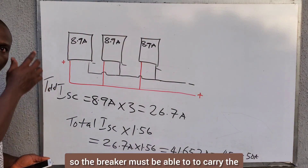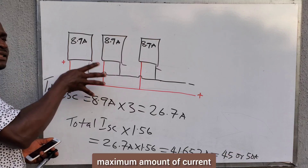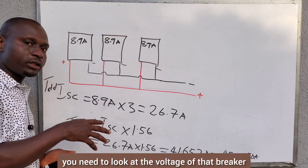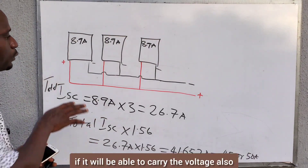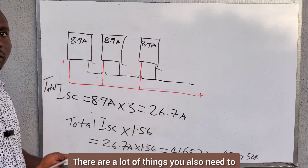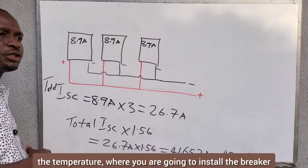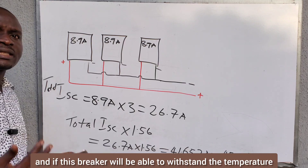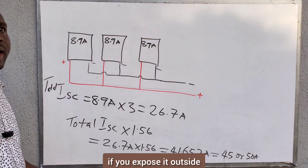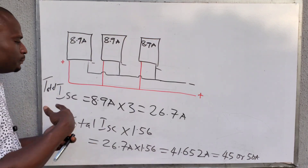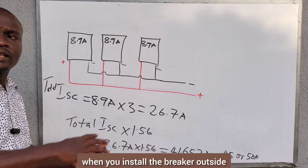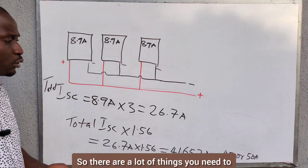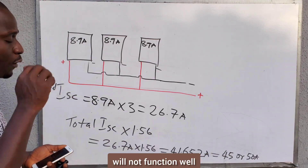The breaker must be able to carry the maximum amount of current that the solar panels are producing. You also need to look at the voltage rating of that breaker — whether it will be able to carry the voltage flowing through the circuit. There are also other things to consider, such as the temperature where you are going to install the breaker, whether it will be outside or inside, and whether the breaker will be able to withstand those conditions. So there are a lot of things you need to consider before choosing that breaker, otherwise the breaker will not function well.